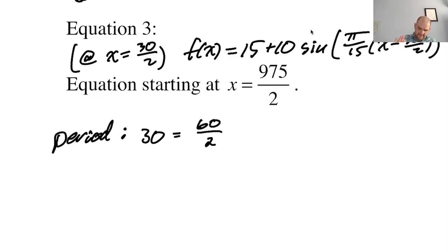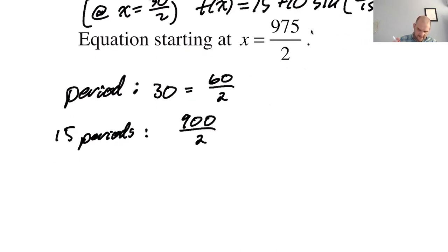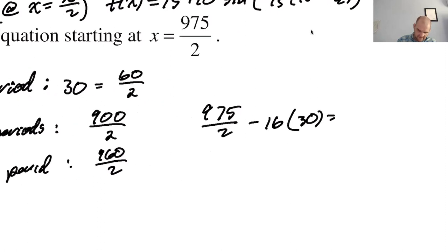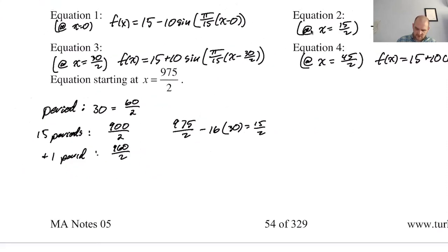So if I multiply this by 15, so 15 periods is going to give me 15 times 60 is 900. So then let me add one more period, so plus one period, give me 960 over 2. So I'm going to do 975 over 2 minus basically 16 times the period. 16 times 30 should give me, so that's 960, that should give me 15 over 2. So I think this is coterminal of 15 over 2.